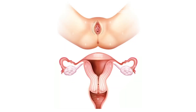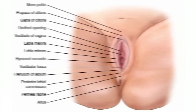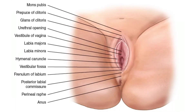The female reproductive system consists of external female genitalia and internal reproductive organs. First, we will look at external female genitalia, which is otherwise called the vulva. This includes the mons pubis, labia majora, labia minora, clitoris, vestibule, and hymen.